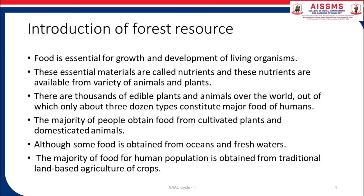Food is essential for growth and development of living organisms. These essential materials are called nutrients and these nutrients are available from various variety of animals and plants. There are thousands of edible plants and animals over the world, out of which only about three dozen types constitute the major food of humans. The majority of people obtain food from cultivated plants and domesticated animals, although some food is obtained from ocean and fresh water. The majority of food for human population is obtained from traditional land-based agriculture of crops.